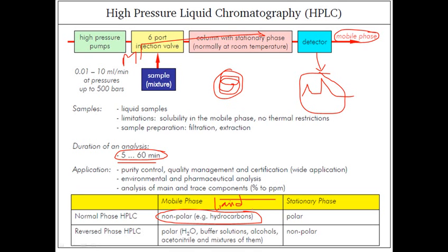The basic applications of HPLC include purity control, quality management, and certification of certain products, drugs, and pesticides. It can also be used for environmental and pharmaceutical analysis purposes.